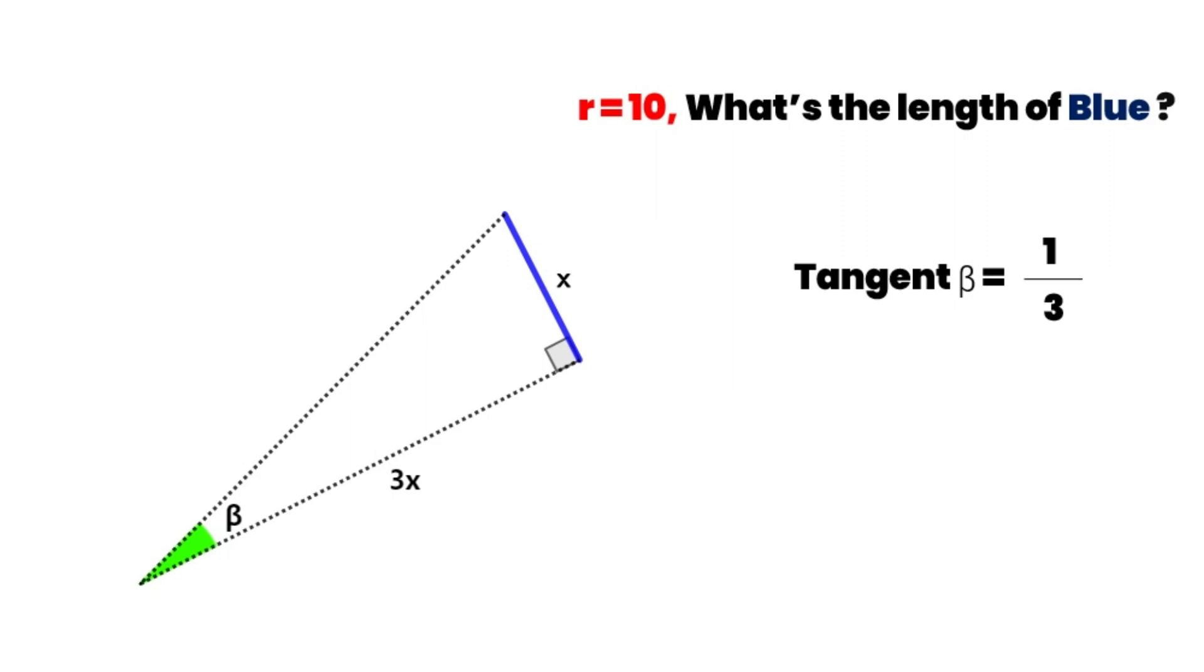So we can figure out that the hypotenuse is equal to X times the square root of 10 by the Pythagorean theorem.